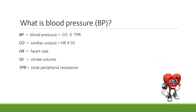Blood pressure is the strength of your blood pushing against the sides of your blood vessels. The formula for blood pressure is CO times TPR. CO is cardiac output, and it's equivalent to HR times SV. HR is heart rate, SV is stroke volume, and TPR is total peripheral resistance.